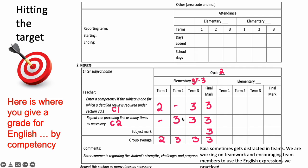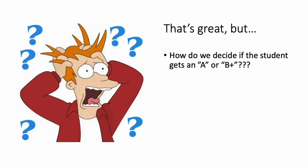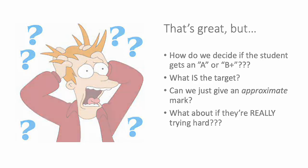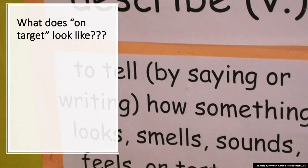So really, you need to figure out how close is the student to hitting the target. If the target is one in the middle, this might be a two, a three, a four, and a five. So one is exceeding it, two is doing really well, three is close enough hitting it, and four and five. So this is what a report card might look like. You can replace these with A's, B's, and C's if you think that's better. But how do we decide if the student gets an A or a B plus? What is the target exactly? Can we give an approximate mark? And what if the student's trying really, really hard? They're not doing super well, but you can see they're putting in effort. Shouldn't that count?